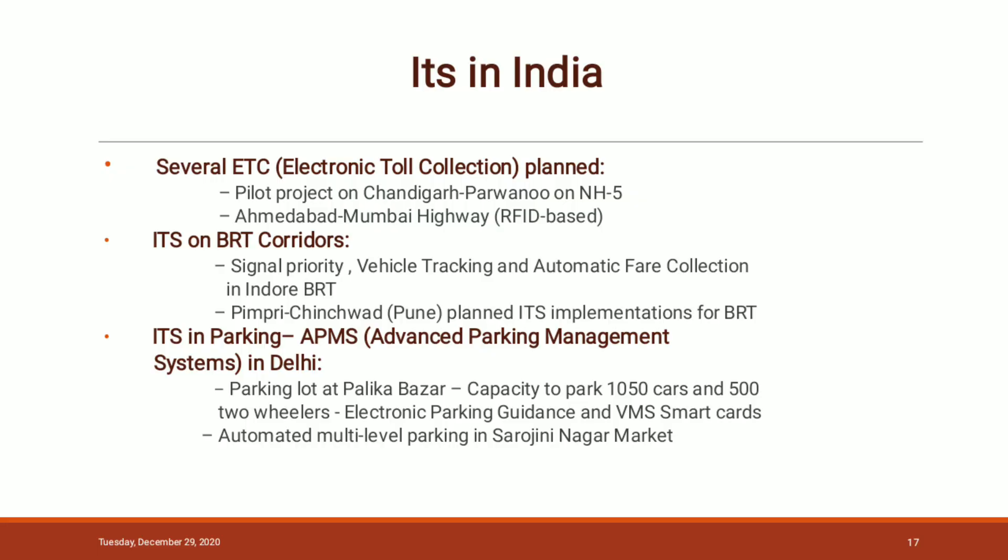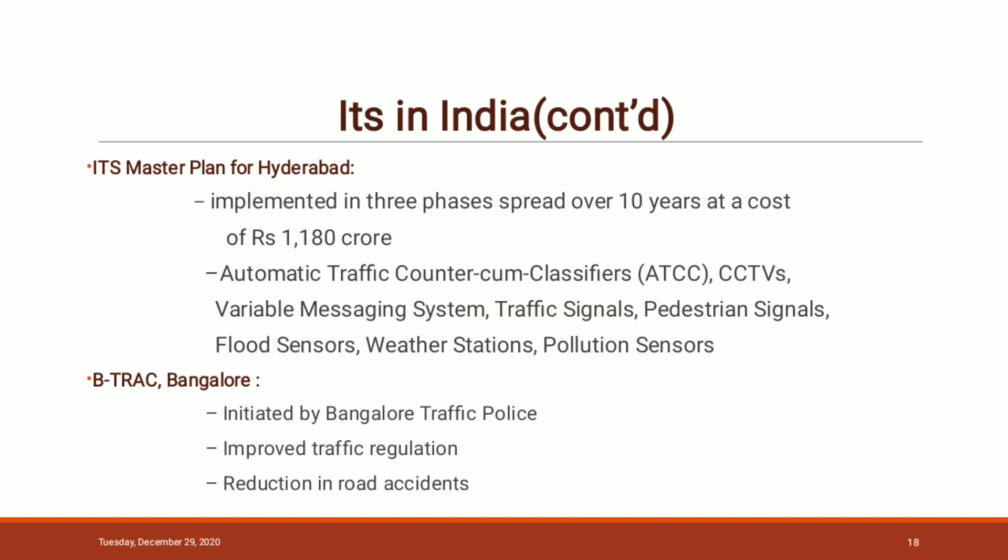Let's discuss the status of ITS in India. ITS is being used across the country — on the Ahmedabad-Mumbai highway and in Chandigarh-Parvano on NH5 for electronic toll collection, ITS is planned. In Pune, ITS on BRT corridors is implemented for vehicle tracking and automatic fare collection. In Delhi, it is used in an advanced parking system. In Hyderabad, ITS is implemented in three phases consisting of automatic traffic counter-cum-classifier, CCTVs, variable messaging system, traffic signals, pedestrian signals, flood sensors, weather stations, and pollution sensors. B-Track Bangalore, initiated by Bangalore traffic police, has improved traffic regulations and contributed to reduction in road accidents.